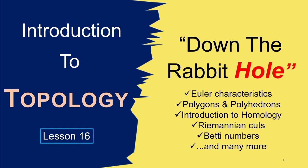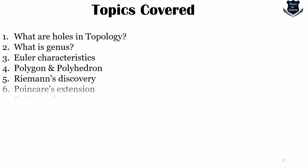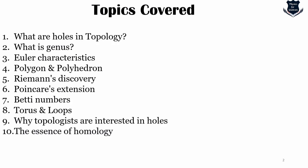Before going into the video topics, let us see what we are covering today. We will learn what are holes and why they are important in topology. We will also learn what is a genus, what are the Euler characteristics, what is a polygon and a polyhedron. Then we will understand certain important discoveries made by Riemann, Poincaré, and Betti. We will also run through what are called loops around a torus, why topologists are interested in holes, and what is the essence of homology and how we can use homology in the industry.